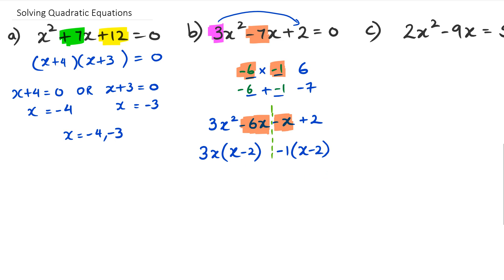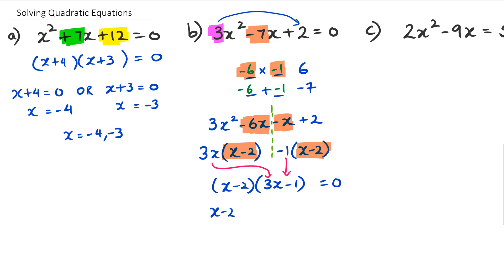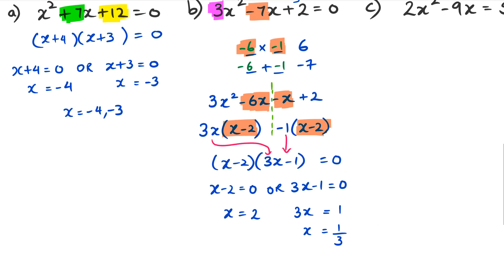Once we do that, we have (x − 2) as a common factor on both sides, so we take it out. The other bracket is (3x − 1) — the 3x comes from the left side and the −1 comes from the right. Since all of this equals zero, either x − 2 = 0 giving x = 2, or 3x − 1 = 0 giving x = 1/3. So our two answers are x = 2 or x = 1/3.